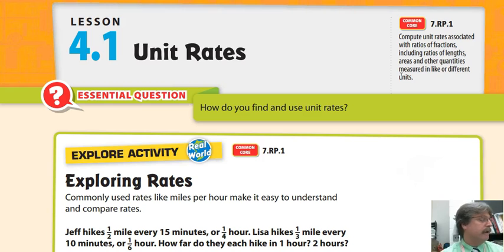A couple things to keep in mind: a ratio is a comparison between two quantities, like miles to hours, or cost to how many units you got, distance to time. A rate is a special type of ratio when two quantities are compared and they have different units.